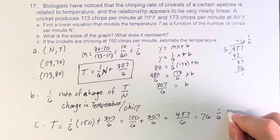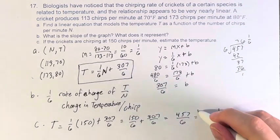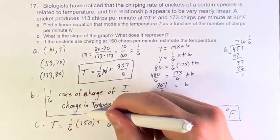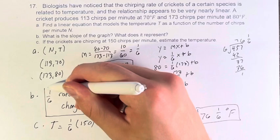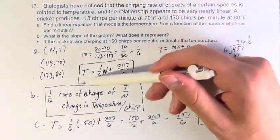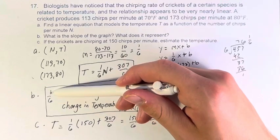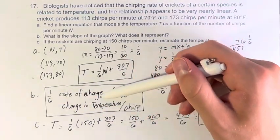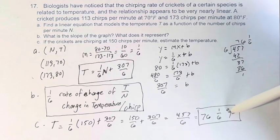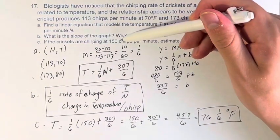So for this particular function, this relation that we found between chirps per minute and temperature, this is the function that models it, this is the slope and what we can actually interpret about it, and this is the temperature that we would expect if the crickets are chirping at 150 chirps per minute.